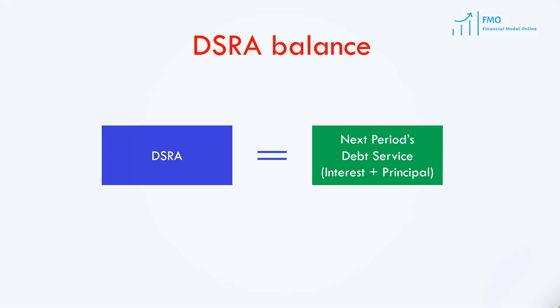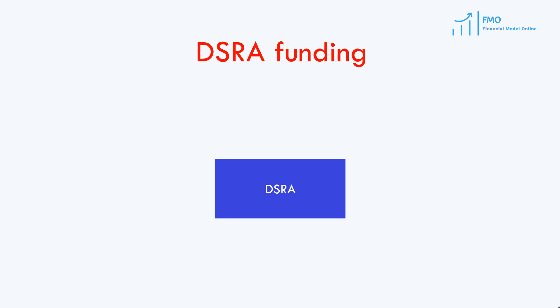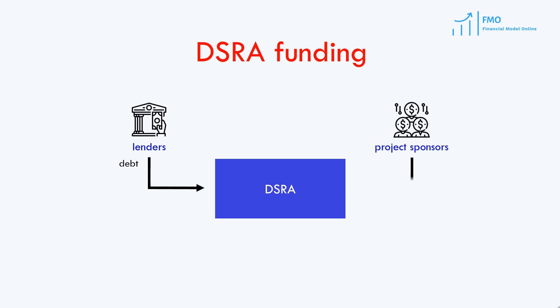Debt Service Reserve Account is usually funded at the end of a construction period, once the loan becomes repayable. The initial funding can be provided entirely by lenders through a debt service facility, or it can be funded by lenders and project sponsors in the same proportion that lenders and sponsors fund the project's capex.